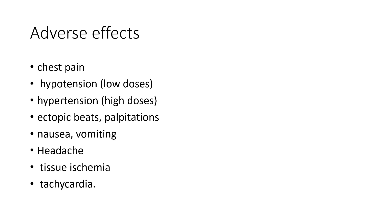Regarding adverse effects: dopamine can cause chest pain. At low doses it may cause hypotension, while at higher doses it causes hypertension. It can also cause ectopic beats, palpitations, nausea, vomiting, and headache. It can cause tissue ischemia — on prolonged usage, there is a risk of peripheral gangrene and gangrene of other organs such as mesenteric ischemia. It can also cause tachycardia and other arrhythmias.